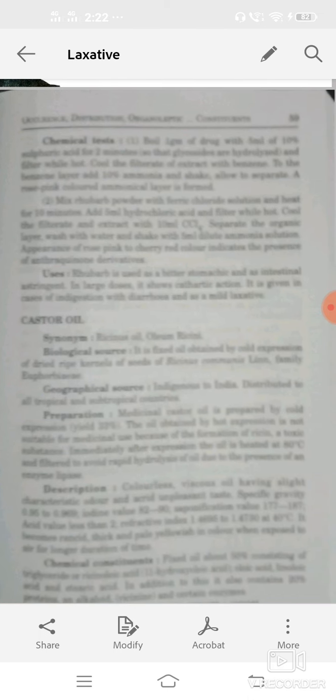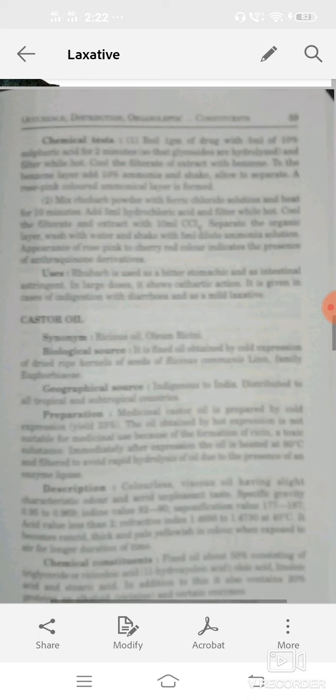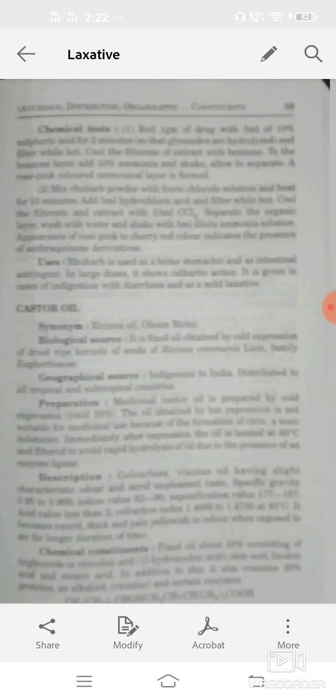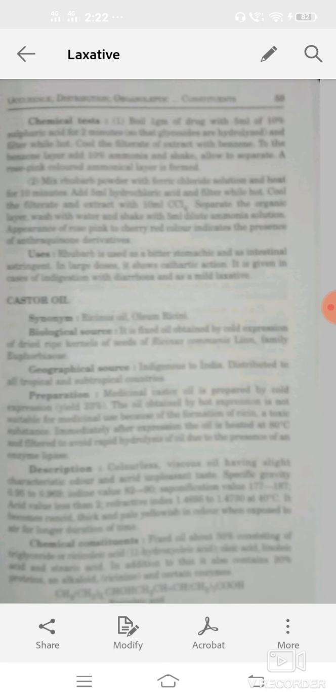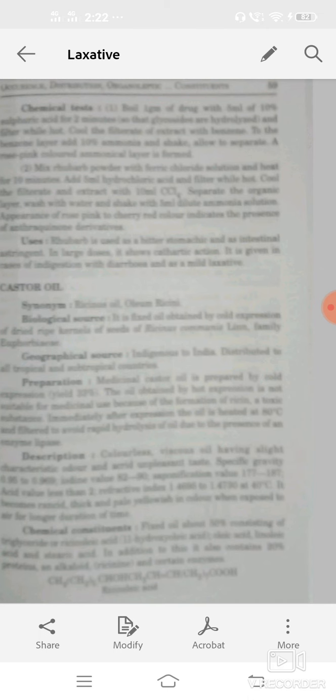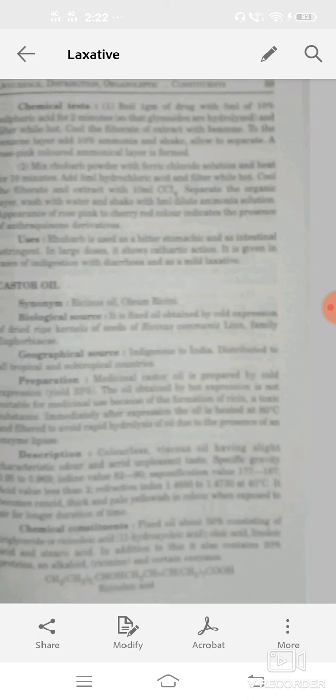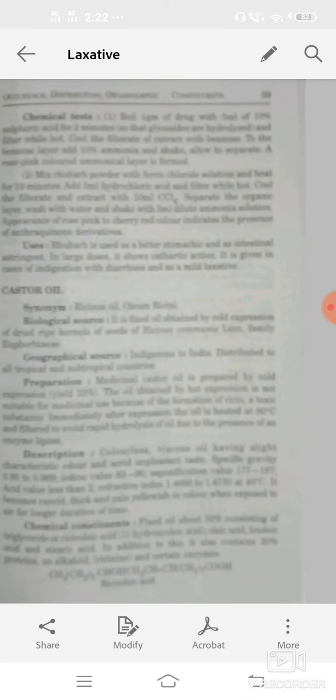Preparation: medicinal castor oil is mainly prepared by cold expression methods. Oil obtained by hot expression not suitable for medicinal use because of formation of ricin, which is a toxic substance for the body. It's prepared by cold expression methods. Immediately after expression, oil heated at 80 degree Celsius or filtered to avoid rapid hydrolysis of oil due to presence of enzyme lipase.